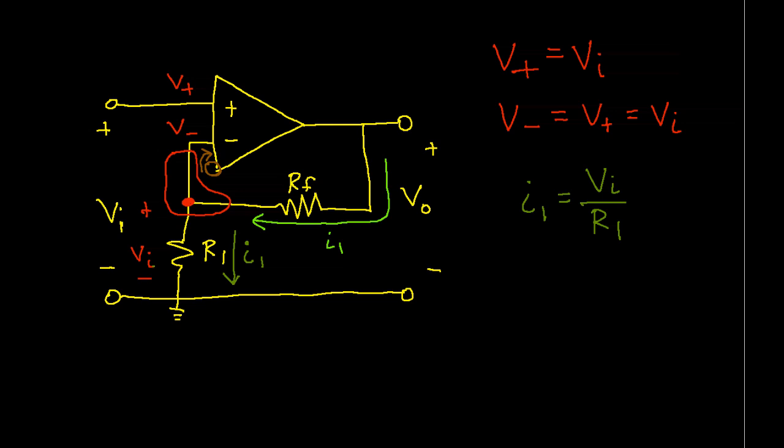So if we know that, then we can compute the voltage across RF. So let's call this VF. This is equal to I1 times RF. We know what I1 is, so we can write this as Vi times RF over R1.